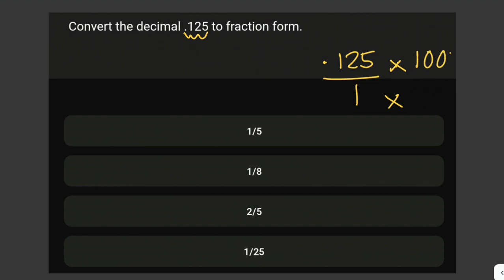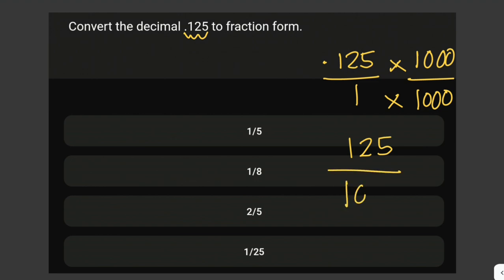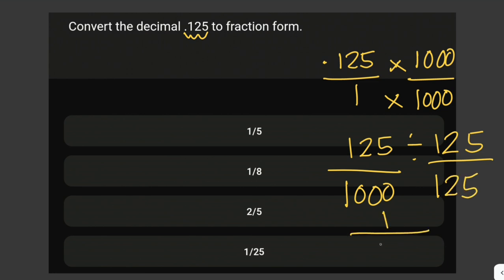We multiply by 1,000 since 10 cubed equals 1,000. So 0.125 times 1,000 gives us 125, and 1 times 1,000 gives us 1,000, resulting in the fraction 125 over 1,000. We can reduce this fraction by dividing both numerator and denominator by 125, which gives us 1 over 8, since 1,000 divided by 125 equals 8. The answer is 1 over 8.